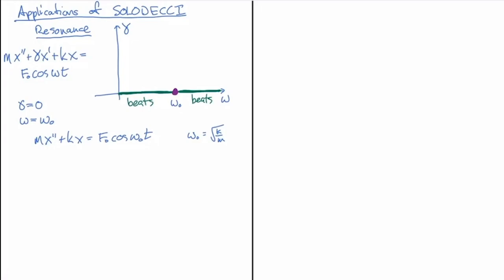This means that the inhomogeneous term conflicts with the homogeneous solutions — it actually solves the homogeneous equation — so our particular solution has to be carefully chosen. I'm not going to go through the full calculation, but the xp of t turns out to be f naught divided by 2 times the square root of km, multiplied by t times sine omega t. Because of the t factor, you'll notice that it grows linearly in time — it's a sinusoid with a linearly growing amplitude.